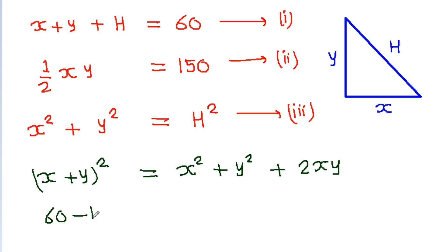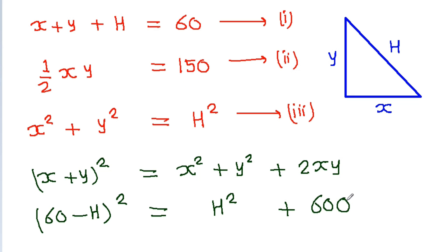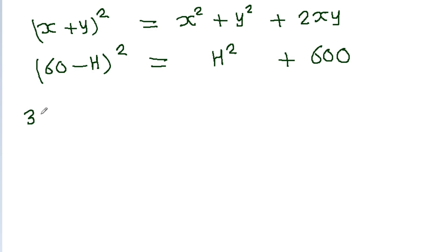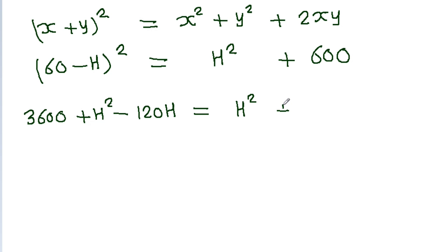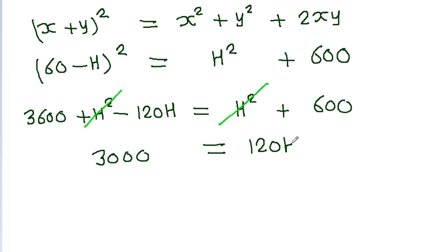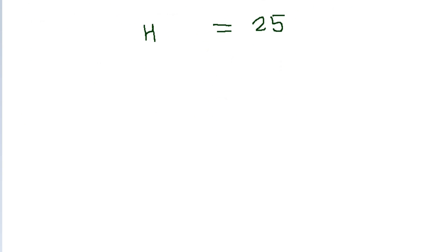Now, x plus y can be written as 60 minus h from the first equation. So (60 − h)² equals x² + y², which equals h² from the third equation, plus 2xy. From the second equation, xy equals 300, so 2xy equals 600. Expanding: 3600 minus 120h plus h² equals h² plus 600. The h² terms cancel, giving 3600 minus 600 equals 120h.